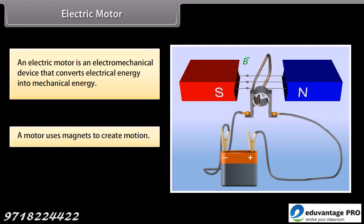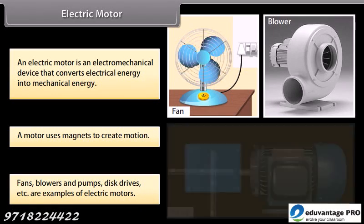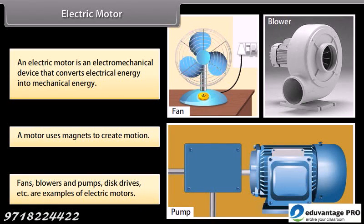Let us look at how electric motors work. A motor uses magnets to create motion. Inside an electric motor, the attracting and repelling forces of a magnet create rotational motion. Fans, blowers and pumps, disc drivers, etc. are some examples of electric motors.